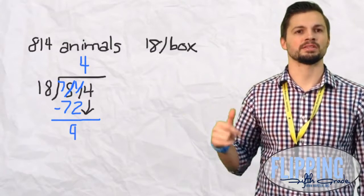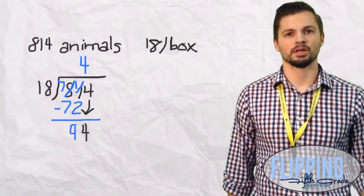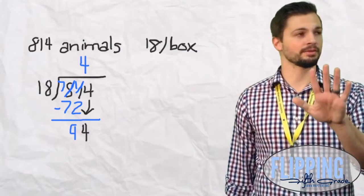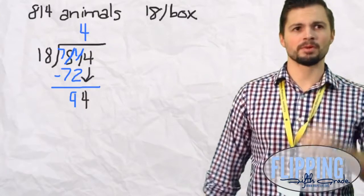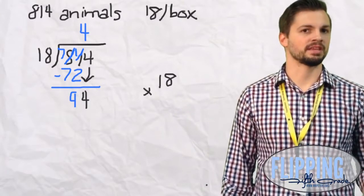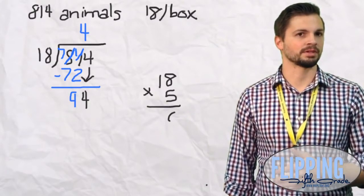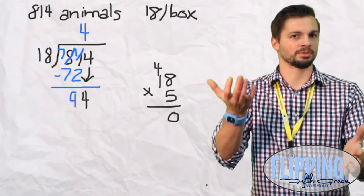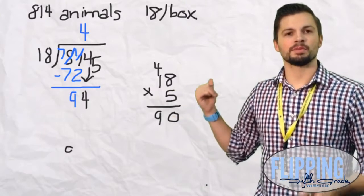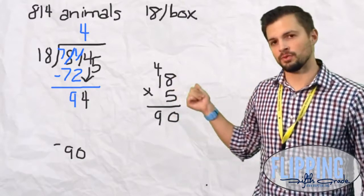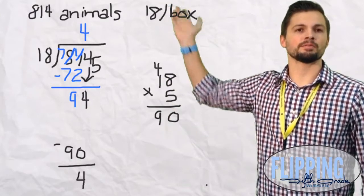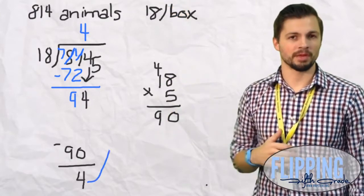Well if 18 went into 81 4 times, my guess would be 5 times. Do that problem off to the side. 18 times 5 is going to give us 90. The same as 9 times 10 because we took 18 by a half and doubled the 5 to a 10. So 18 times 5 is 90 so we put that beneath the 94. 94 minus 90 is 4 so we have the 5 up top and we have the 4 so we have a remainder of 4.